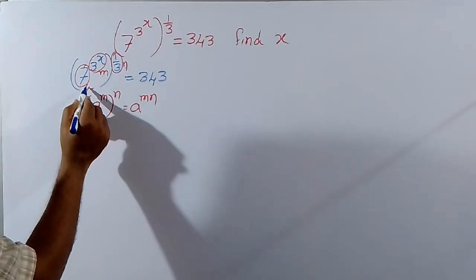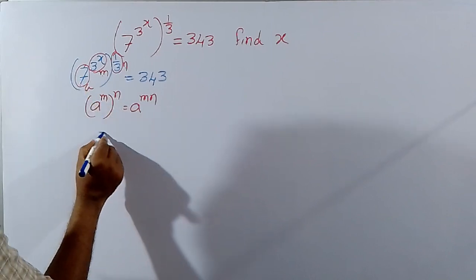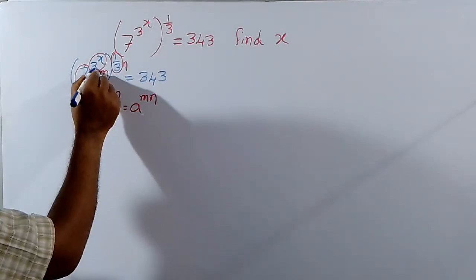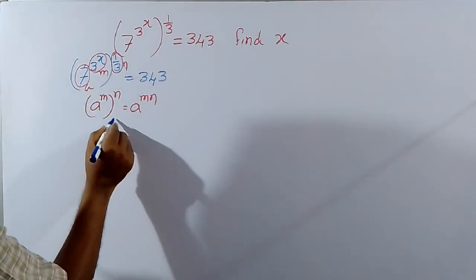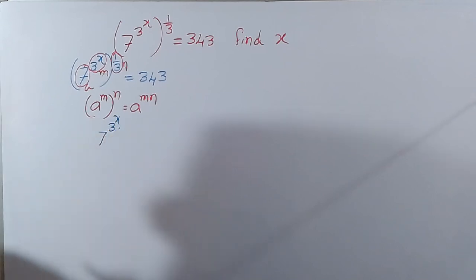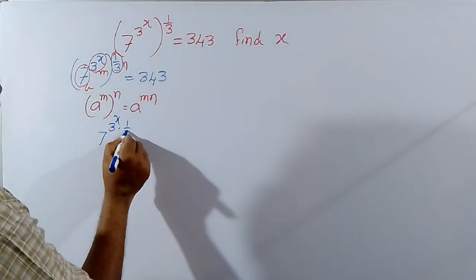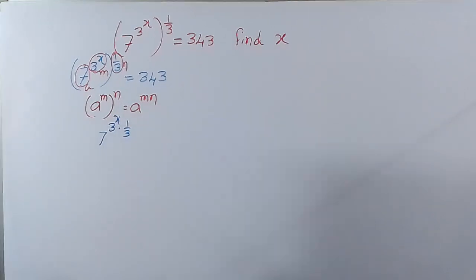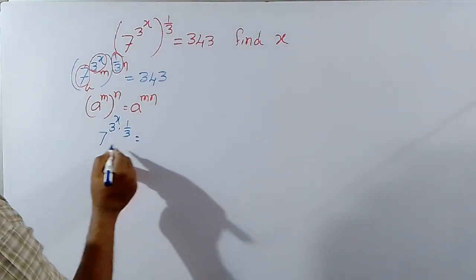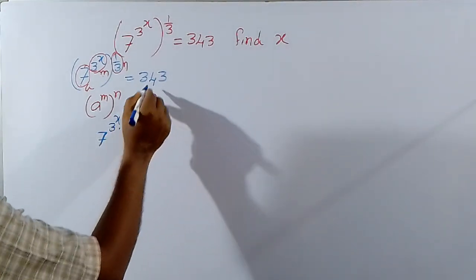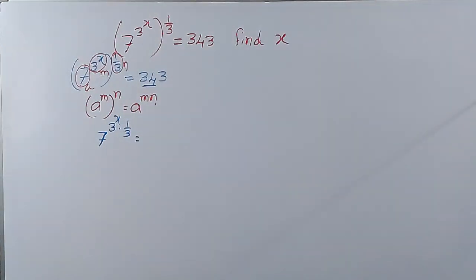By using this formula, how can you write this? a means 7. 7 power m, m means 3 power x into n, n means 1 by 3. This is equal to 343. And here base 7 is there, so 343 also can be expressed as 7 power something.